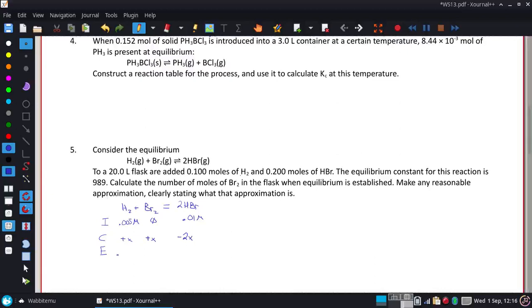So at equilibrium, this is going to be predicted to be 0.005 plus x. This will just be x, and this is going to be 0.01 minus 2x.